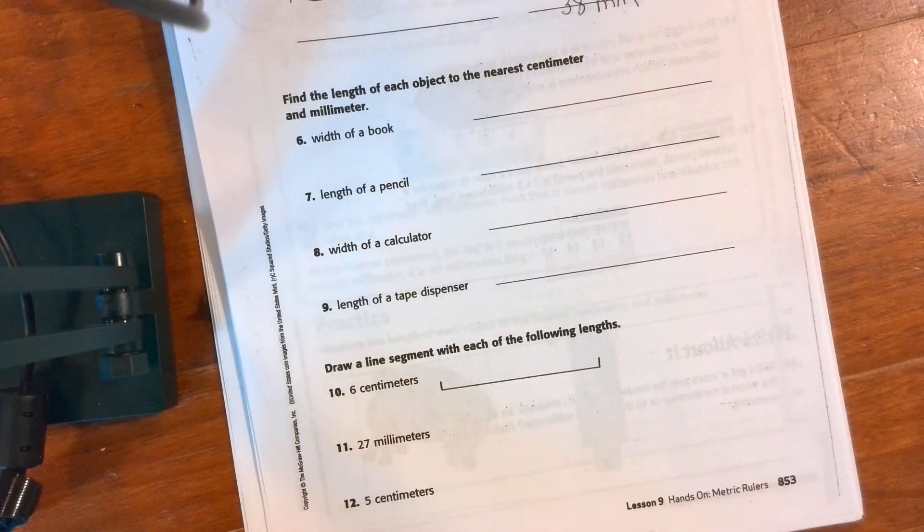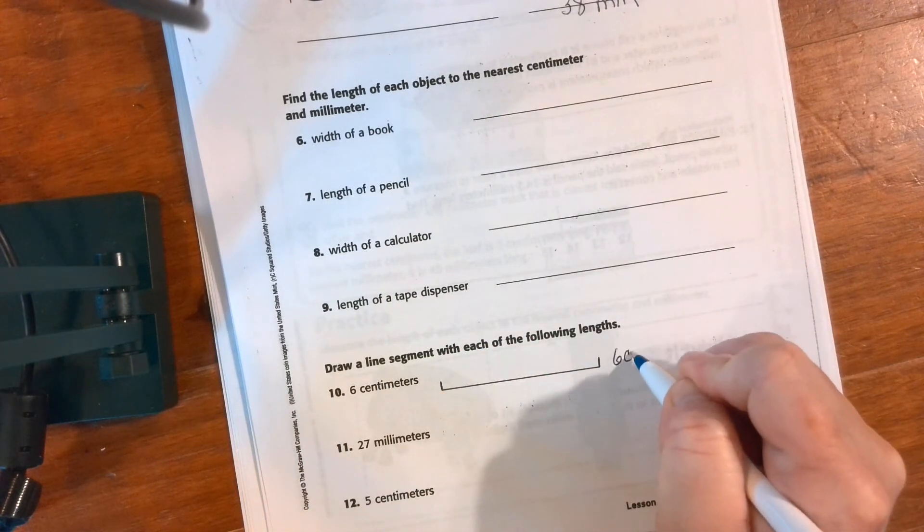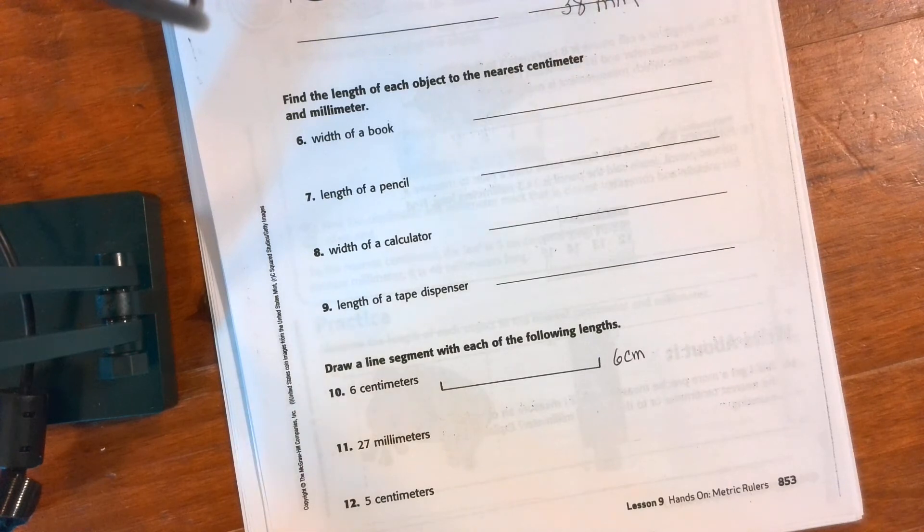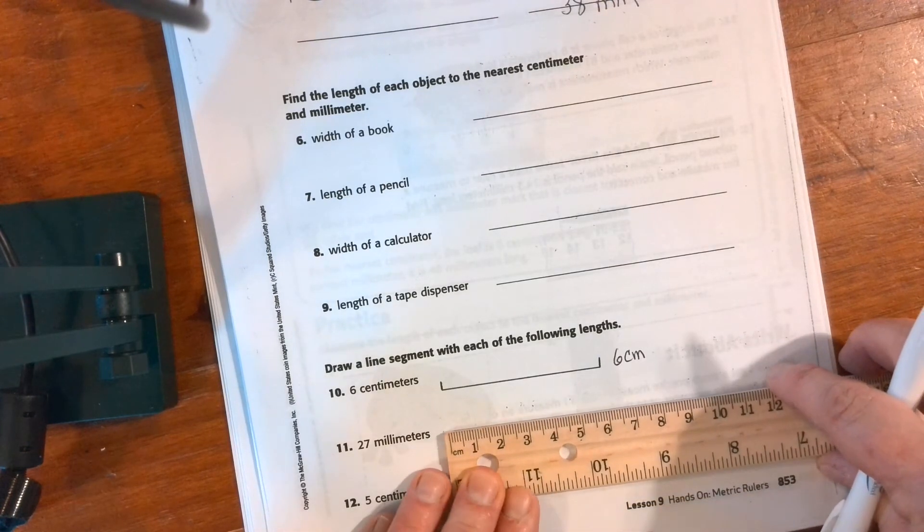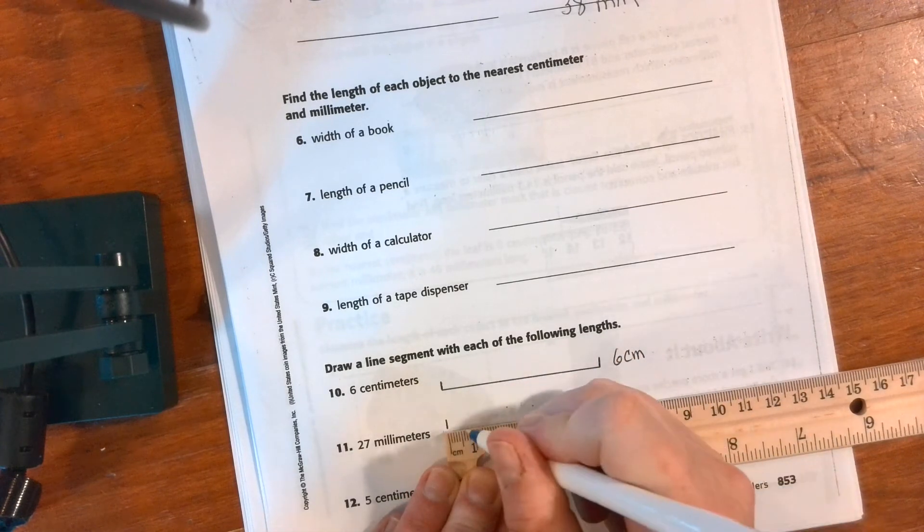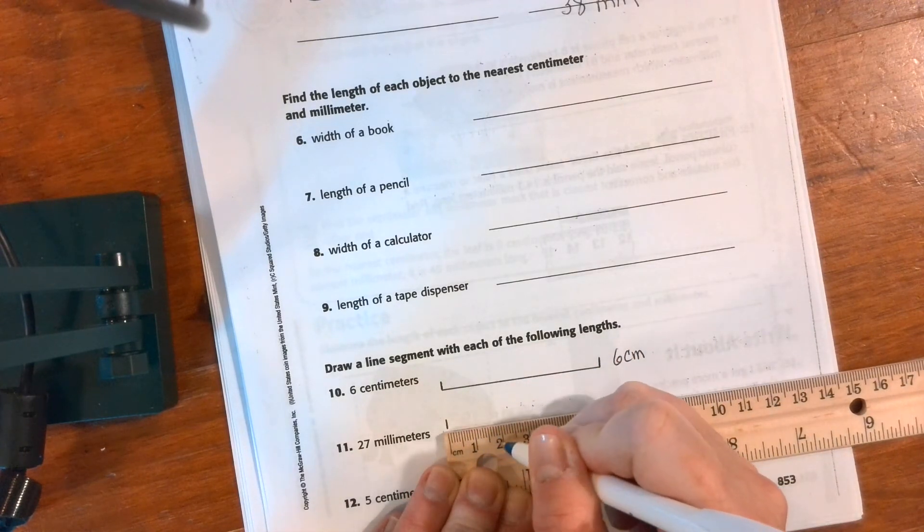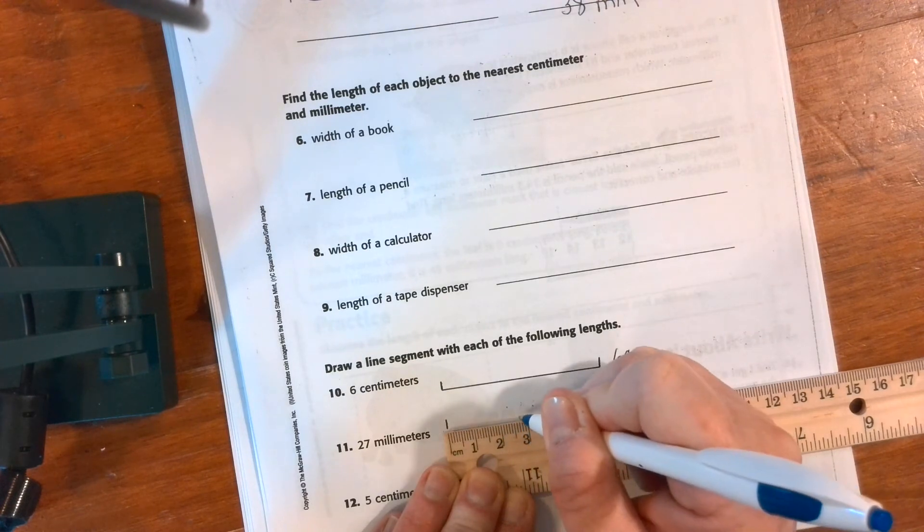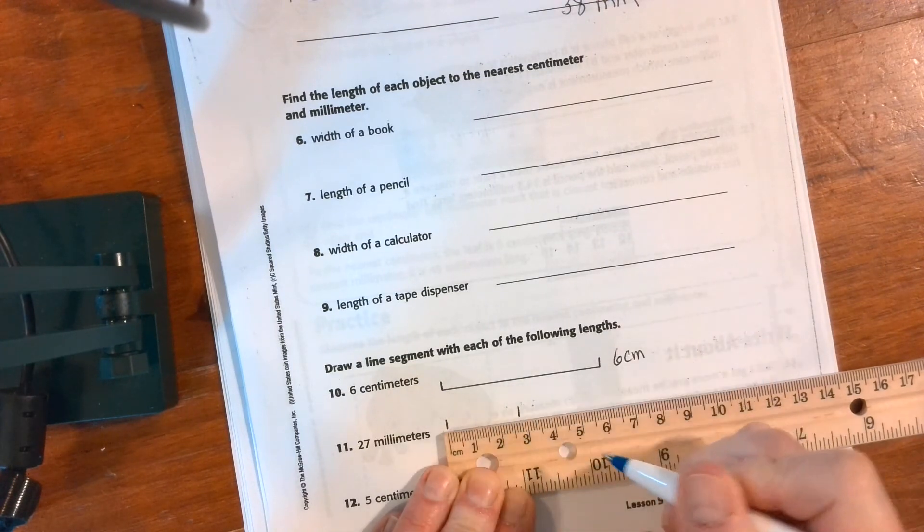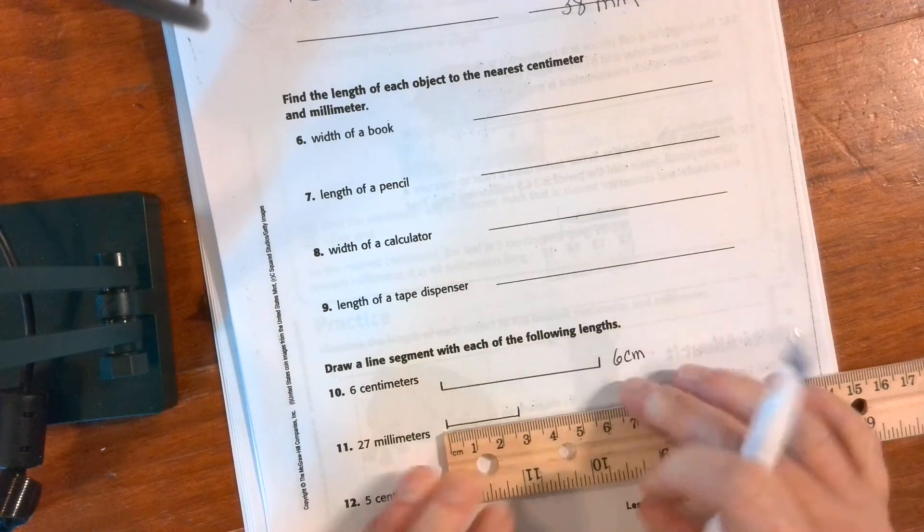Twenty-seven millimeters. So I'm going to make a line at zero, I'm going to count 10, 20, 1, 2, 3, 4, 5, 6, 7, make a little line and connect them. Twenty-seven millimeters.